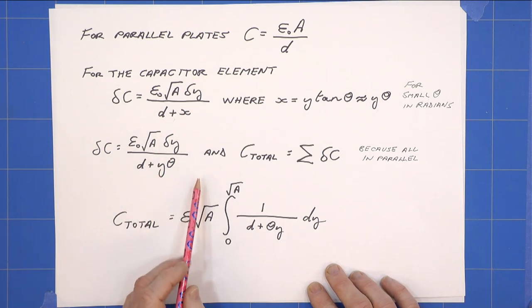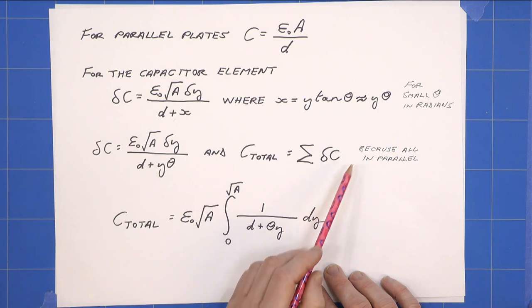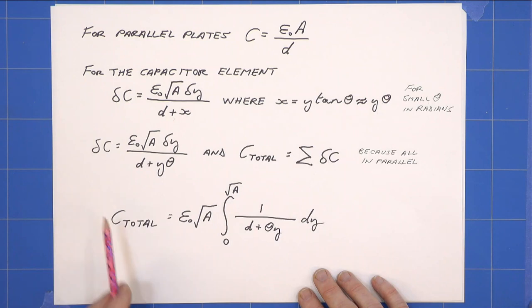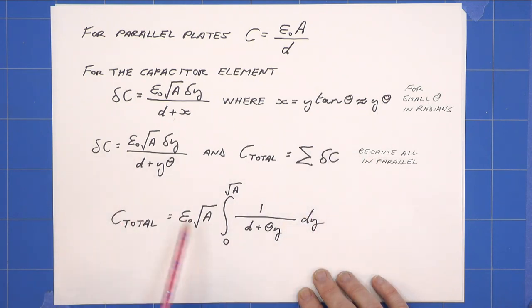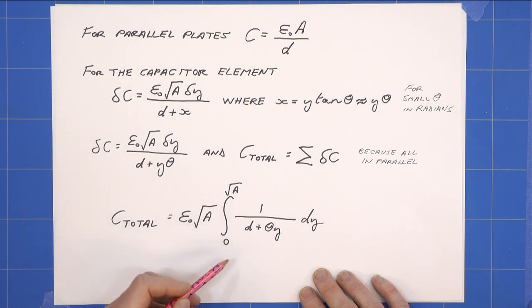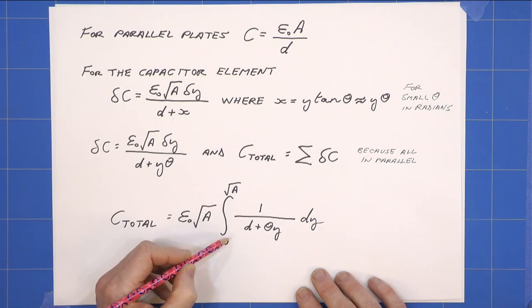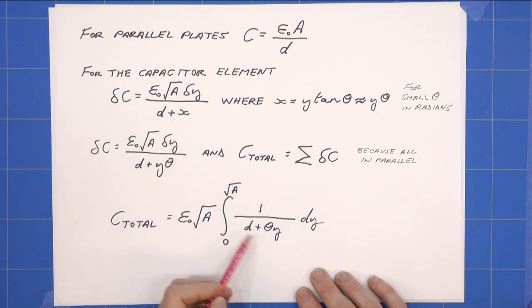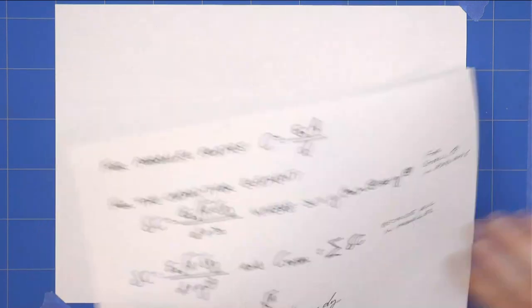X is approximately Y theta, so that becomes this equation here, where I've taken the X and put in Y theta. And the total capacitance is simply the sum of these little delta C's, which gives us an integral because they're all in parallel. That's how we can do that sum. So that gives us a total capacitance, which is the integral. I've taken the constant outside the integral: epsilon naught root A, integrating from Y equals zero to root A of one over D plus theta Y dY, which is a standard integral if we do a U substitution.